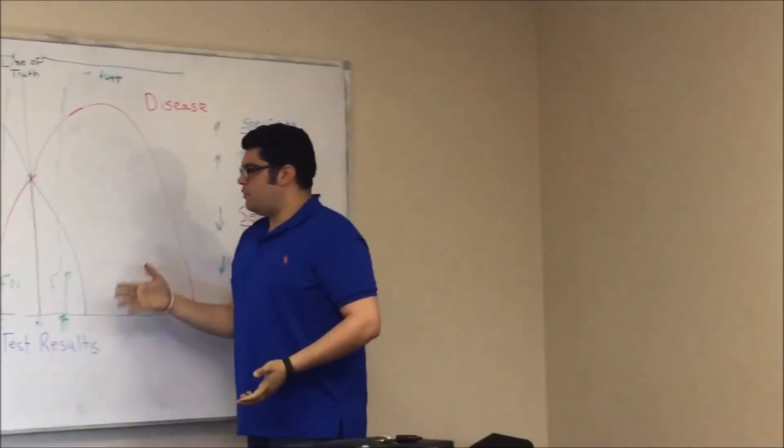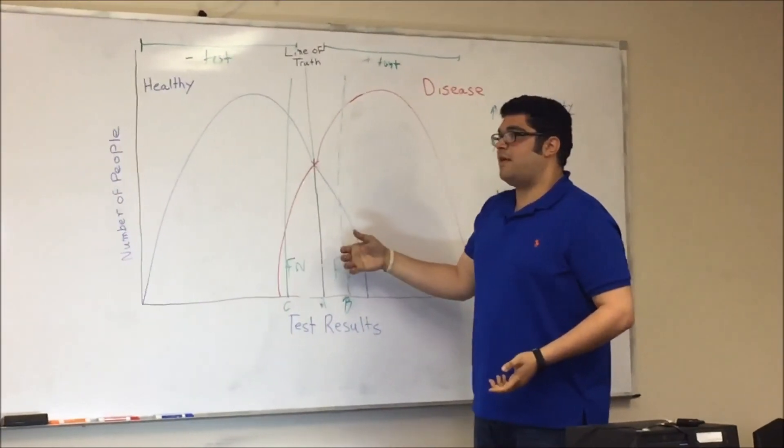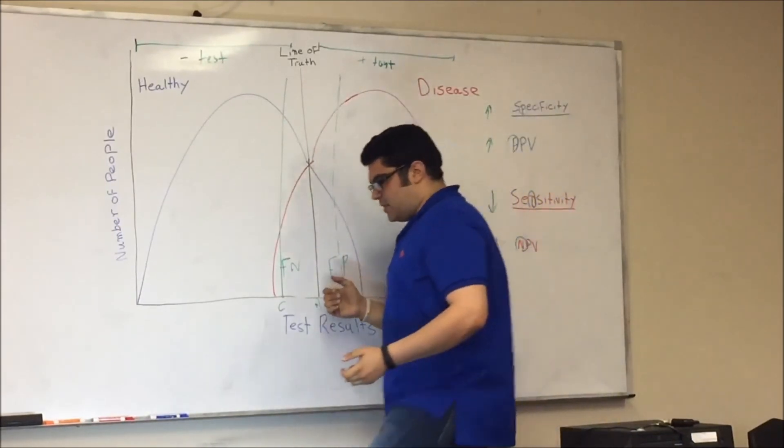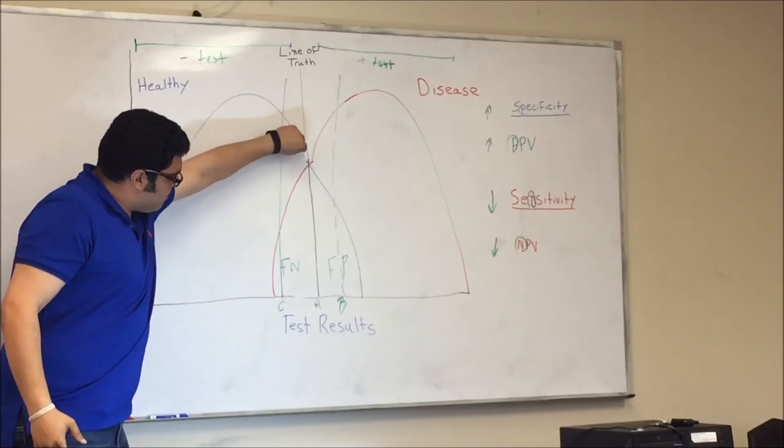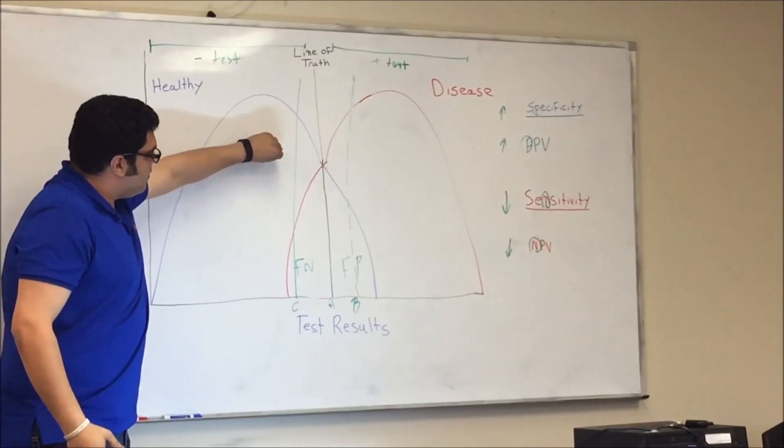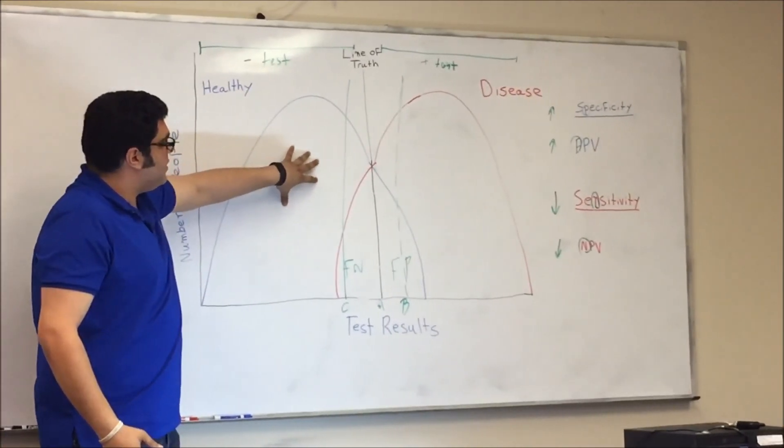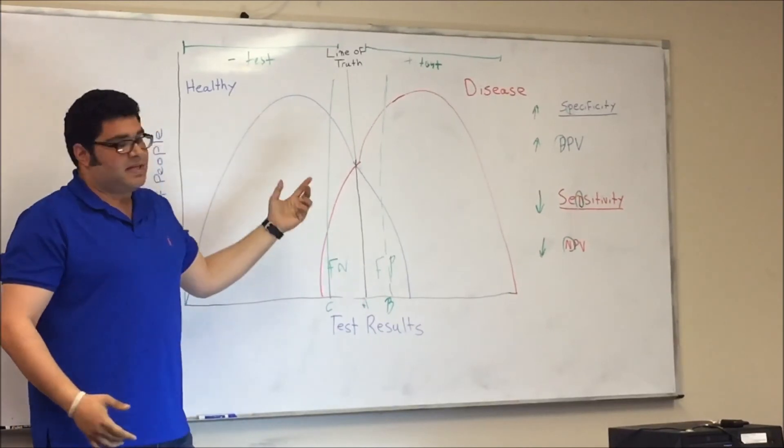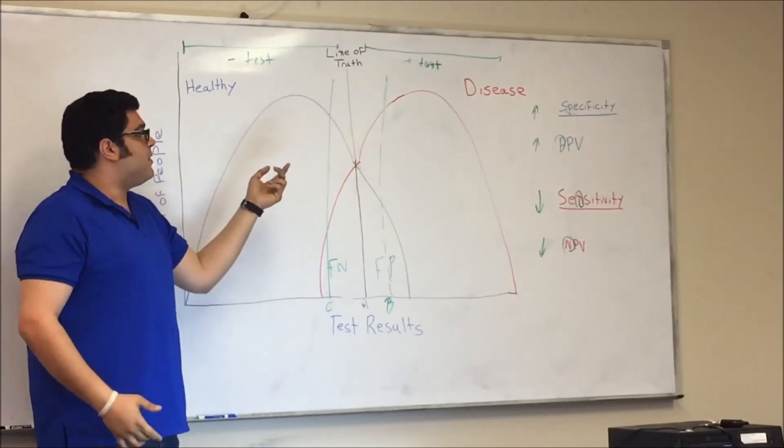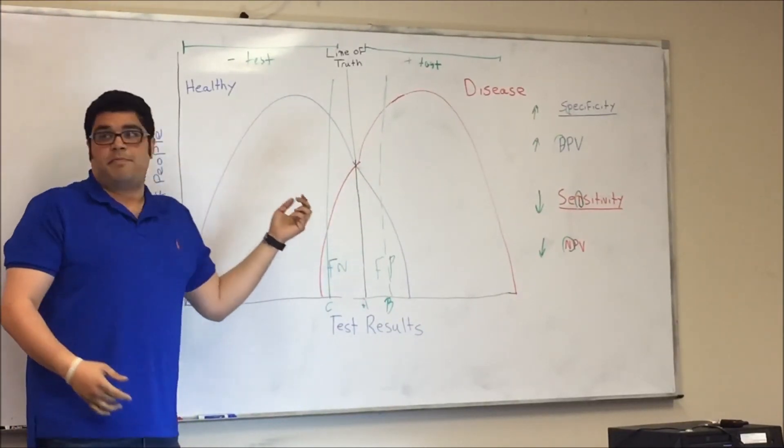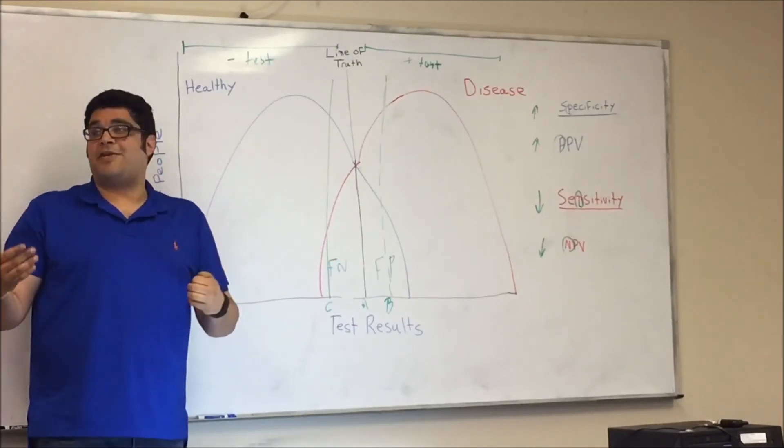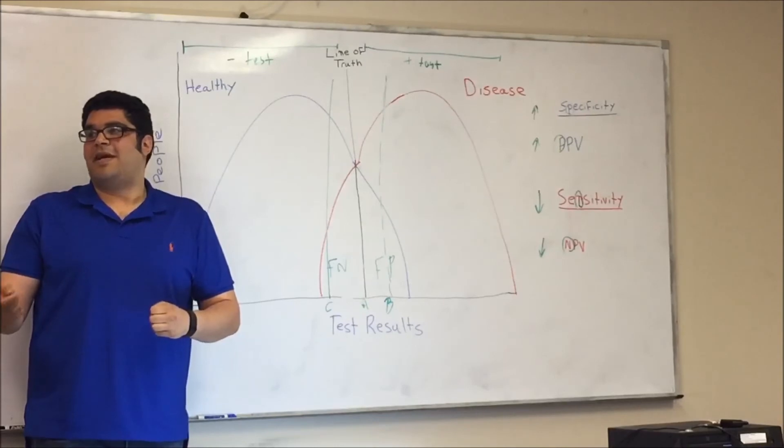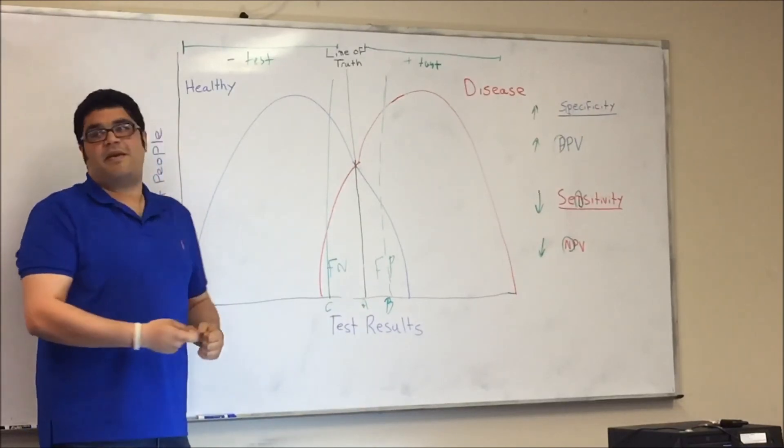Awesome. All right, so you want me to move the line of truth from A to C, correct? Correct. All right, I'm going to switch over. I'm going to grab the line. I'm going to pull it to C. So, if I'm doing this, then I'm going to be decreasing specificity, and I'm going to be decreasing PPV. Also, at the same time, I'm going to be increasing sensitivity, and increasing NPV. Excellent.